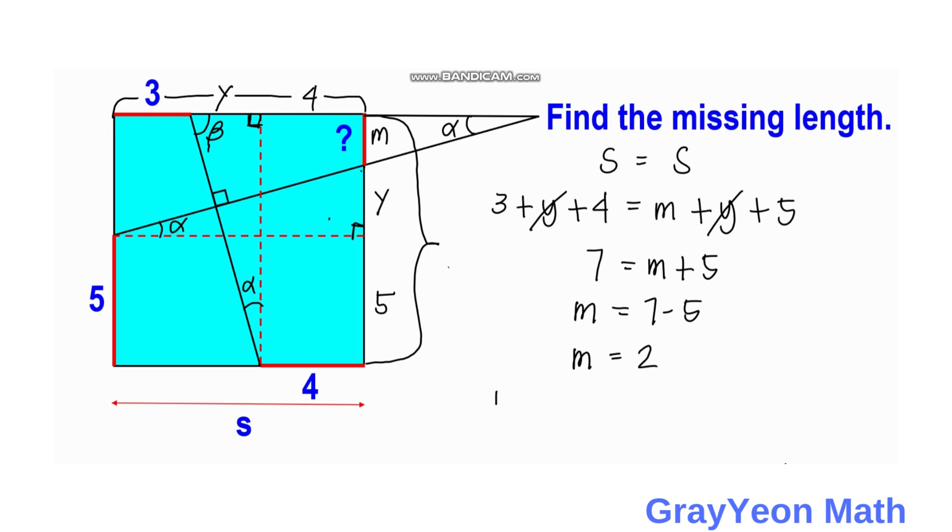So the missing length is equal to two units. And that is our answer.